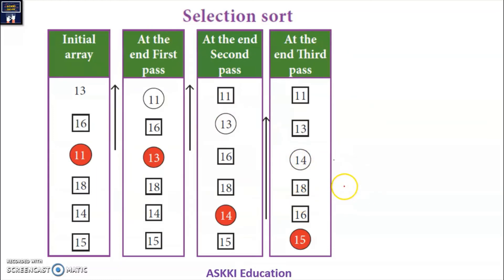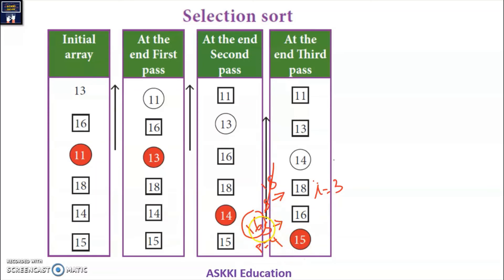Now we come to the fourth pass. I is 3. S is initially 18. Comparing 18 and 16: 16 is smaller, so S is updated to 16 and position is 4. Comparing 16 and 15: 15 is smaller, so S is updated to 15 and position is 5. We have reached the end of the array. We exchange position 5 with position 3. We get the sorted portion with 15 placed correctly at the end of the fourth pass.